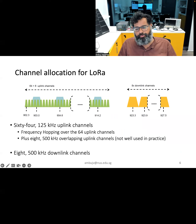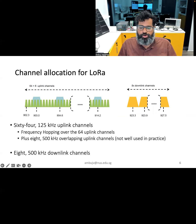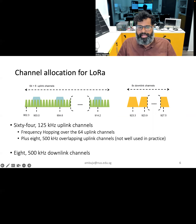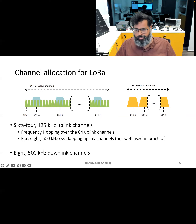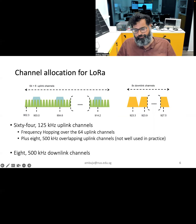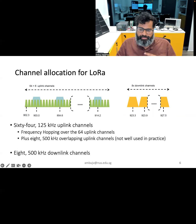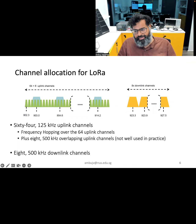Regarding channel allocation for LoRa, the protocol is very uplink-focused because most wide area networks require offloading sensor data from the device to the gateway, rather than communication from the gateway to the end node. In the LoRa standard for the United States, there are 64 uplink channels that are 125 kilohertz wide, and 8 downlink channels that are 500 kilohertz wide to enable communication from the gateway to the end nodes. The specific details may differ in other parts of the world.